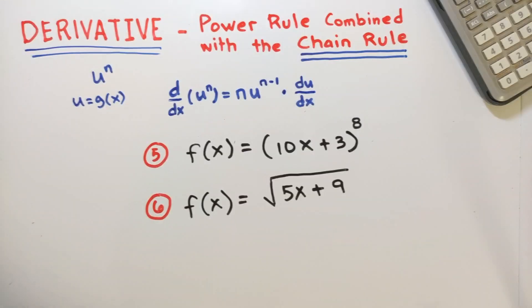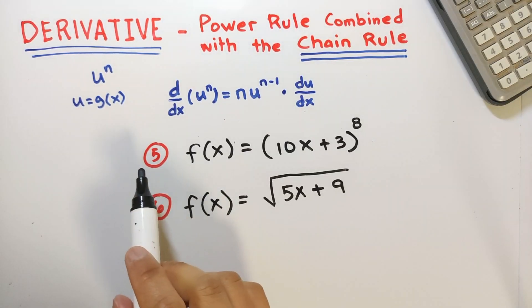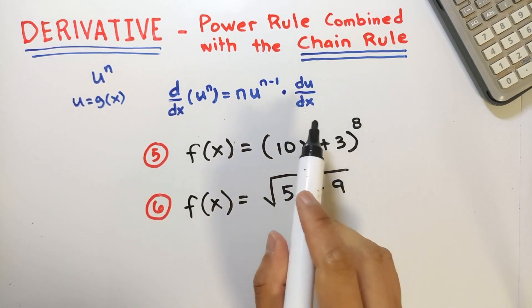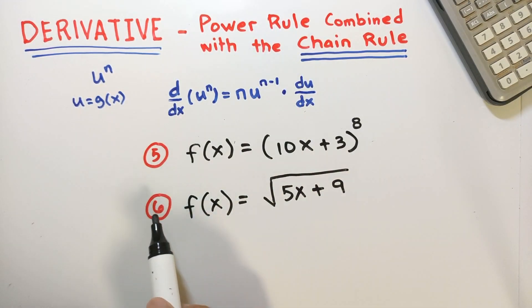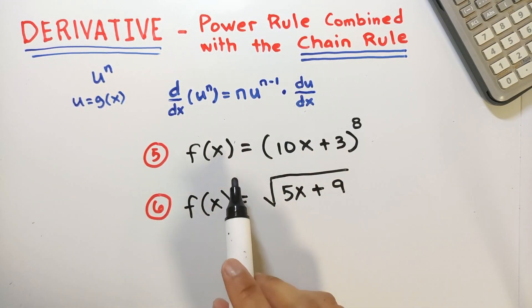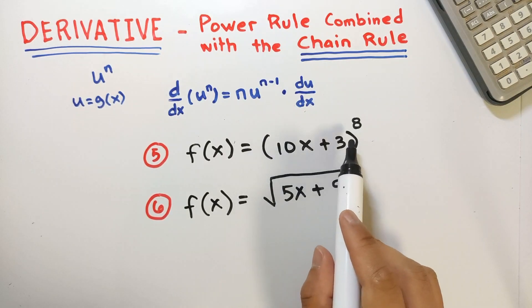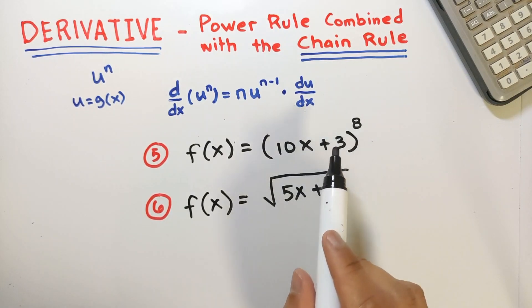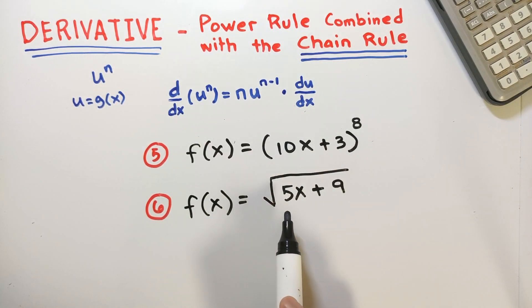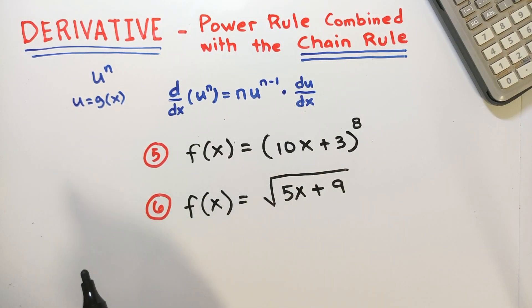You may try finding the derivative of these functions: f of x equals 10x plus 3 raised to 8, and f of x equals the square root of 5x plus 9. Share your answers in the comment section.